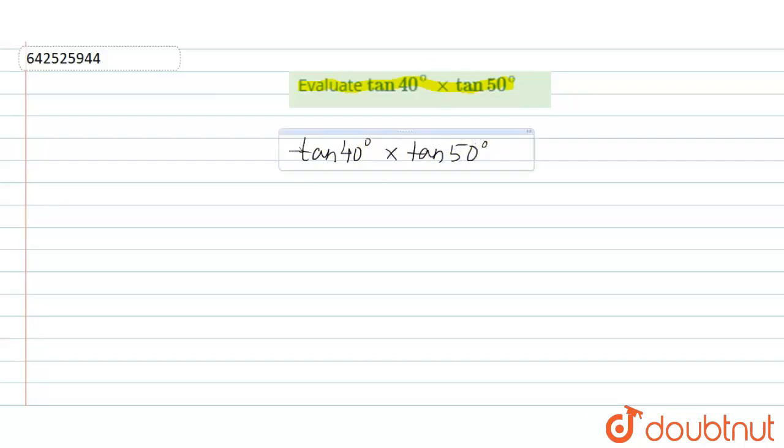Let's look at the formula: tan of 90 minus theta is equal to cot theta.